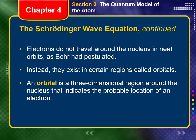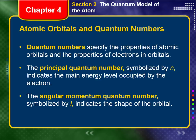Electrons do not travel around the nucleus in neat orbits as Bohr had postulated — just like planets — because planets are macro-scale objects that behave according to our traditional understanding of how the world works. Instead, they operate on the quantum level and they exist in certain regions called orbitals. An orbital is a three-dimensional region around the nucleus — not just a concentric circle — and it indicates the probable location of an electron. You cannot say the electron is here or there; it is simply an area of probable location.